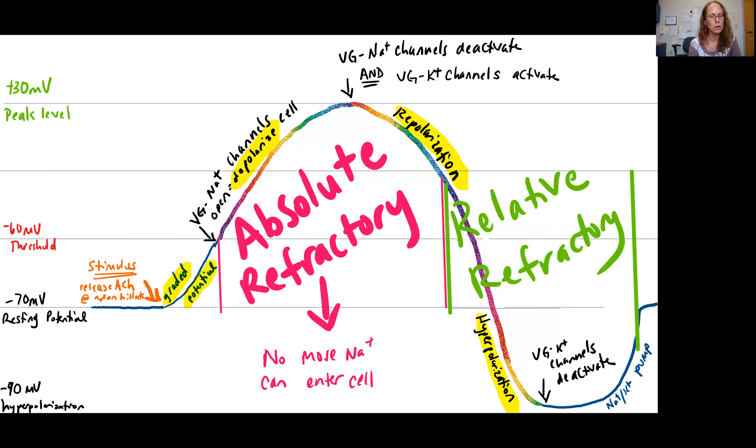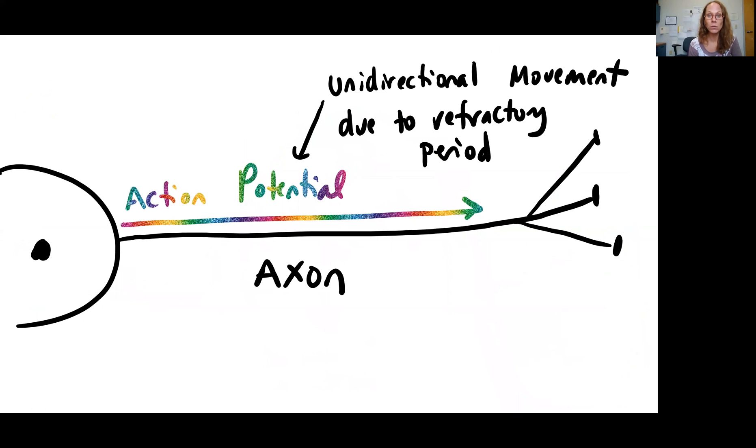It's just going to take a really big graded potential to get the cell to threshold at this time. So it's not likely. Again, why is this significant? This has given us the unidirectional movement of the action potential. It's going one way, from the axon hillock to that synaptic knob. And that is it for now. Stay tuned.